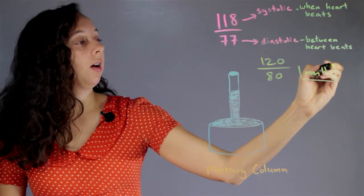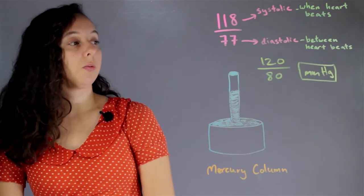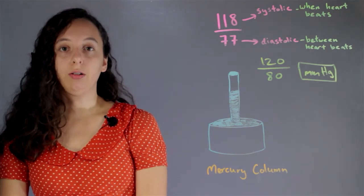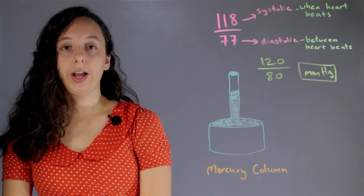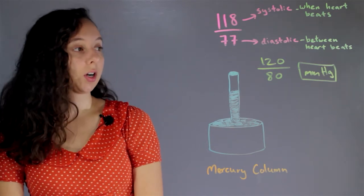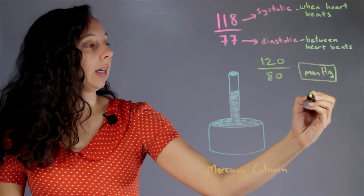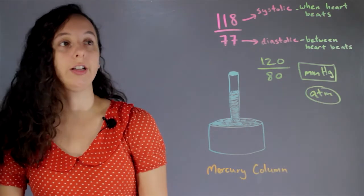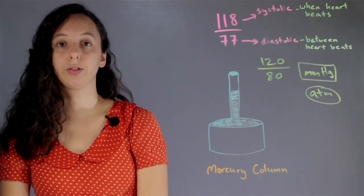And what millimeters mercury are is really just a unit for describing pressure. So it's not special, it's not a unique unit, it's just a way of describing pressure. So another common pressure unit is ATM or atmospheres. But for blood pressure, historically, we just always use millimeters of mercury.